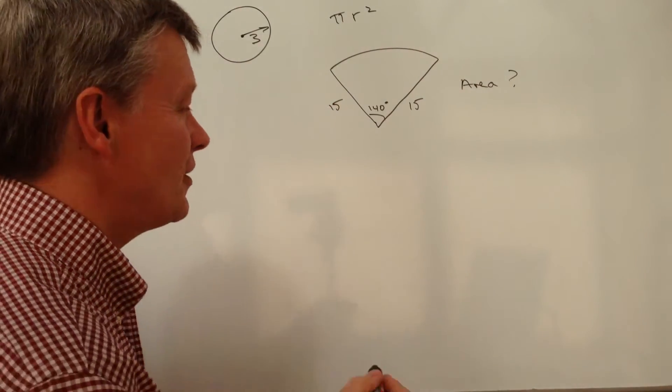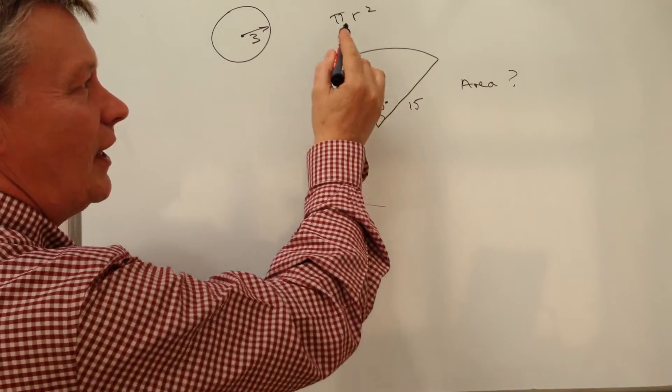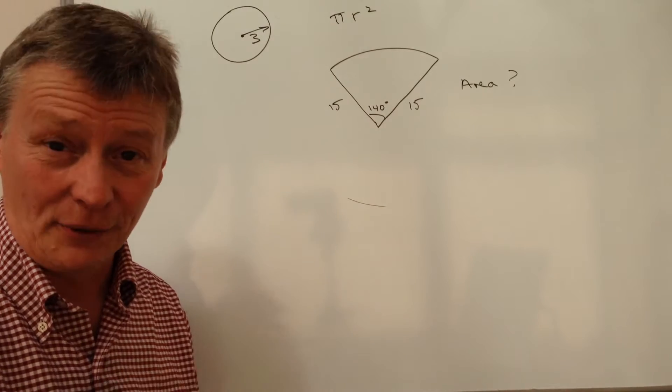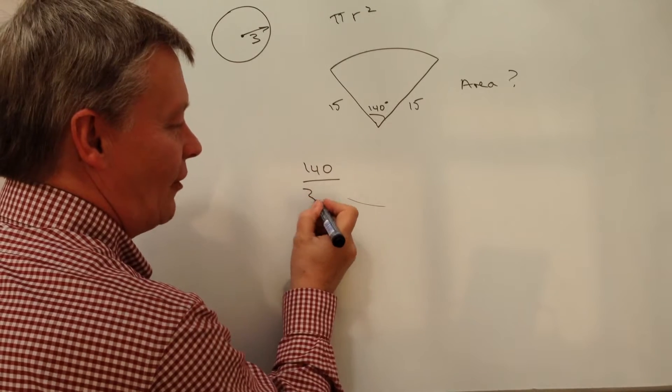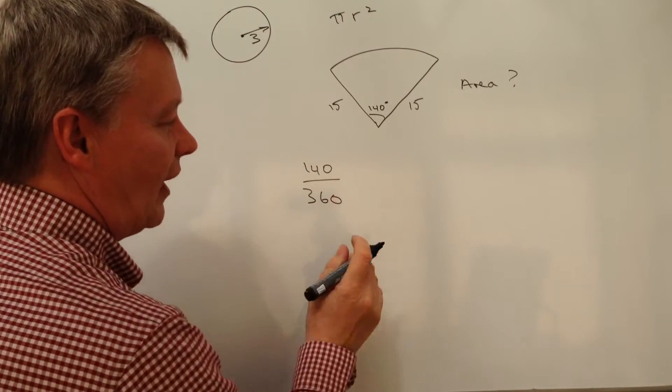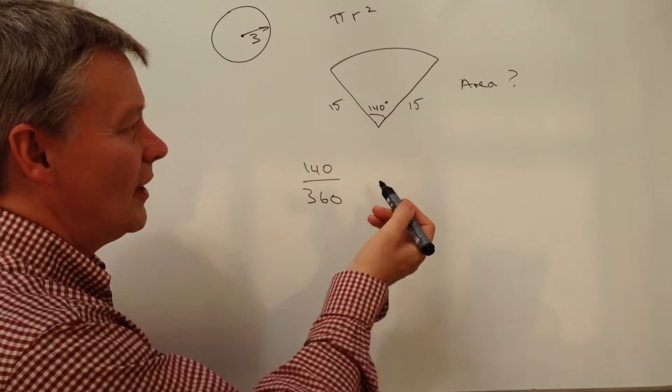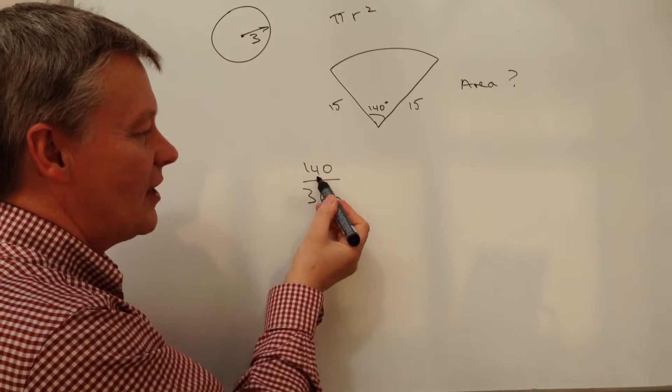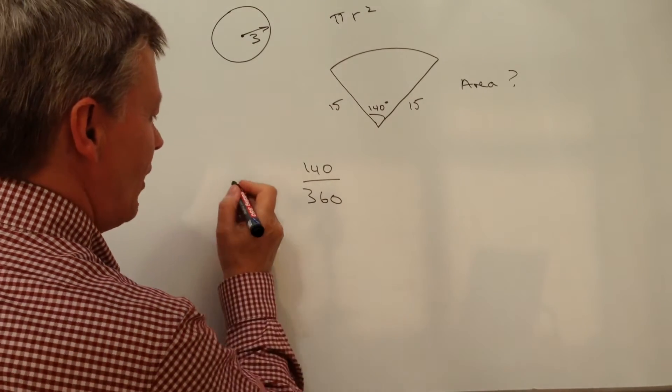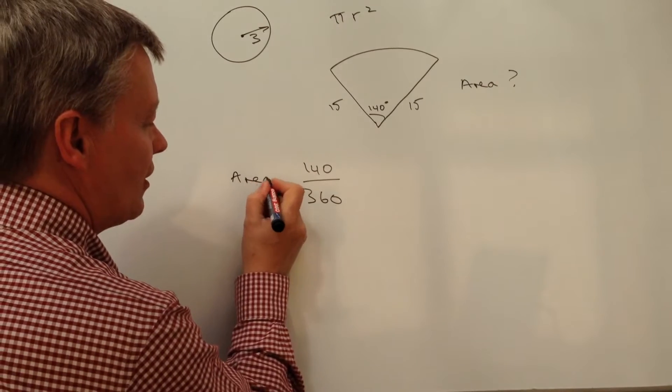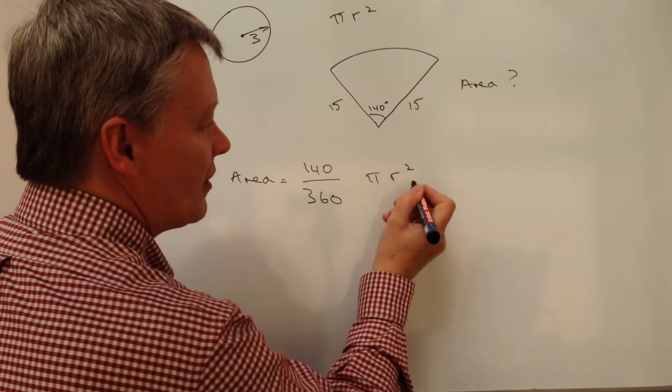The reason you can do that is you can imagine that if this was an overall circle with a radius of 15, you could plug the number in and you would get your area. Well, this particular case, we've actually got 140 out of 360 degrees. So actually, we've got a fraction of the circle. It's 140 out of 360 degrees overall. So that means that we can use the area equals a fraction of pi r squared.